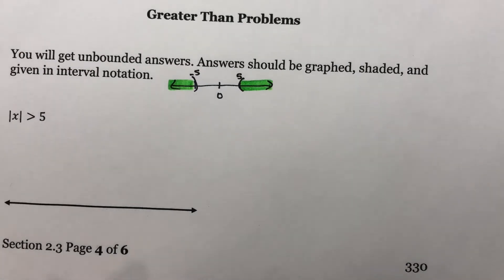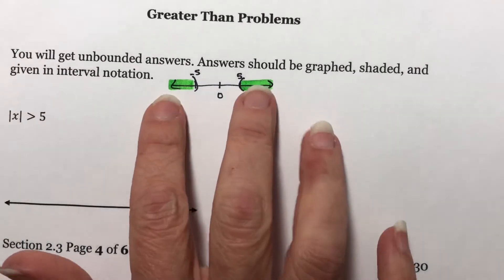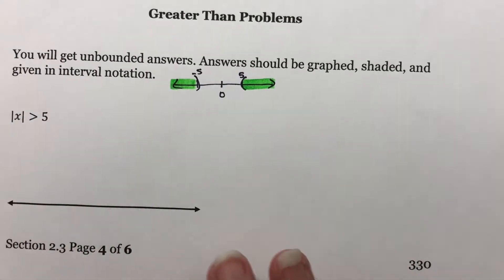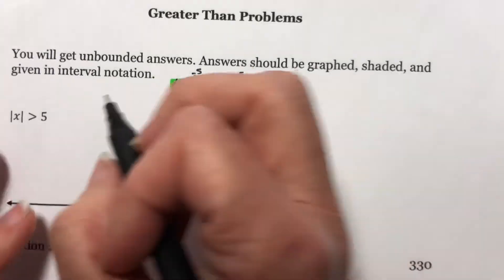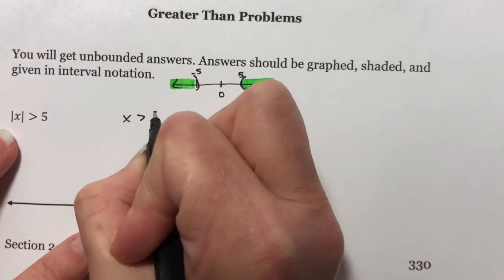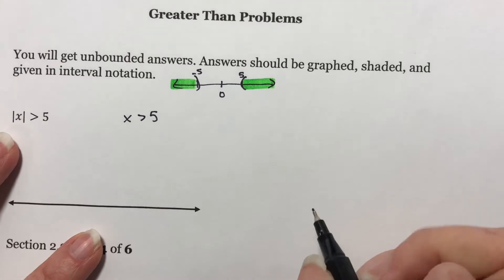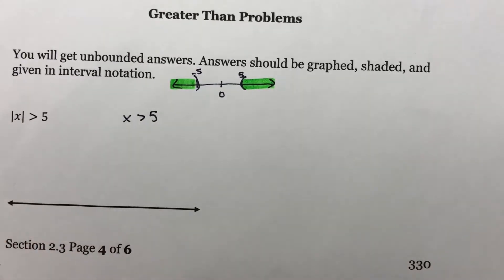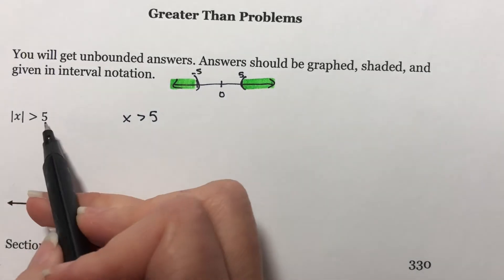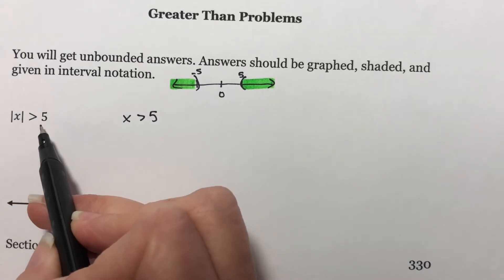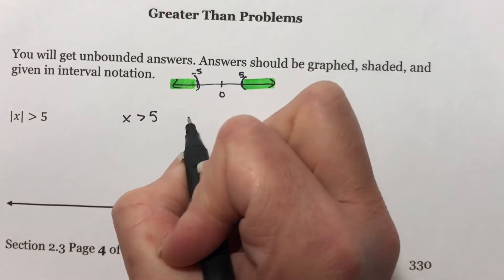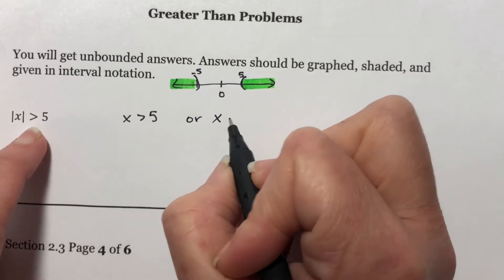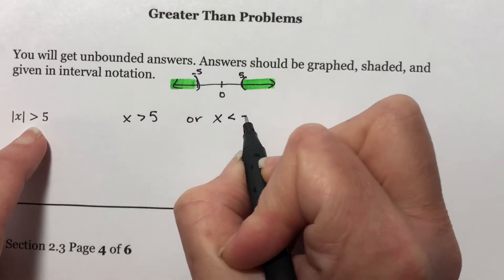So how do we get this worked? We already know what our answer should be, but what's the process? It's going to feel fairly similar to what we've done before. First thing, you're going to drop the absolute value and write it exactly as it is. Now, what we've done in all of them — both the equal to problem and the less than problem — is that we always dealt with a positive version and a negative version. We're still going to do that. Or, x is — we have to flip this sign around — less than negative 5.